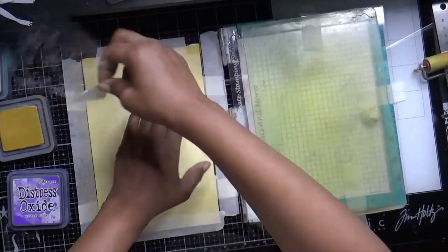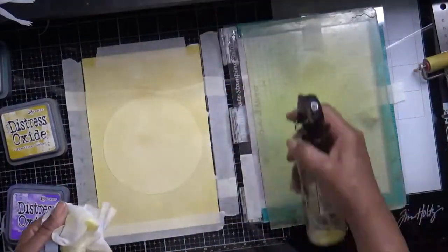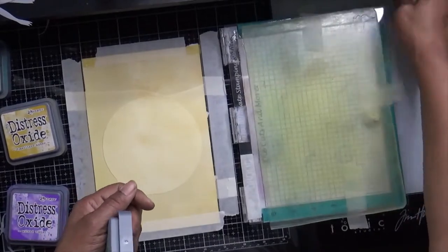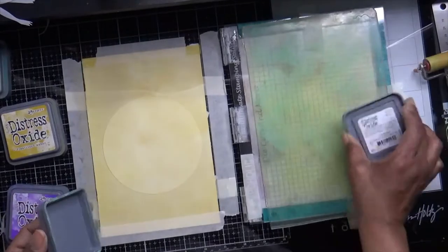Now I'm placing where I want my stencil to be. And I'm going to go ahead and finish inking the inside, I really want to just concentrate on the inside of the circle.